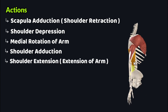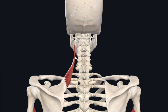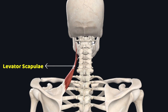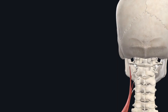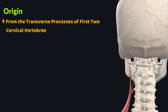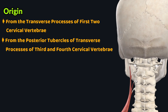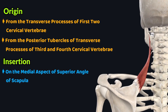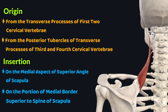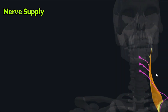The last action of the latissimus dorsi is shoulder extension — on contraction it acts on the proximal humerus and extends the arm. The third muscle of this region is the levator scapulae, a thin strap-like muscle found in the lateral cervical region of the neck, lying deep to the trapezius. The levator scapulae originates from the transverse processes of the first two cervical vertebrae and the posterior tubercles of the transverse processes of the third and fourth cervical vertebrae.